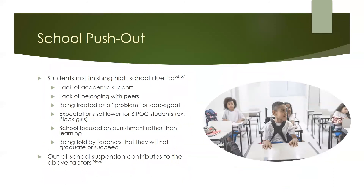Out-of-school suspension is one factor in what is called school push-out. School push-out describes the phenomenon of students being discouraged from continuing in school, due to a combination of lack of academic support, lack of support from peers and teachers, and a belief that being in school is not worthwhile. This can stem from teachers directly telling students they will not graduate or succeed, setting lowered expectations for certain students, or labeling certain students as a problem. This has been documented to happen most often with students of color and students with disabilities. Exclusionary discipline, like out-of-school suspension, contributes to students not feeling like they belong at school.